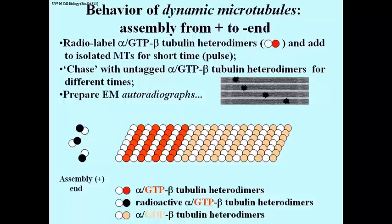During the time that the non-radioactive heterodimers are present — called the chase — the microtubule will continue to grow. But during the chase period, they are not adding radioactive heterodimers; they're adding non-radioactive heterodimers. If you sample microtubules at different times during the chase and make autoradiographs, right after the pulse you might see microtubules with radioactivity — dark silver grains on the autoradiograph — at one end of the microtubule. Most of the microtubules will be labeled at an end.